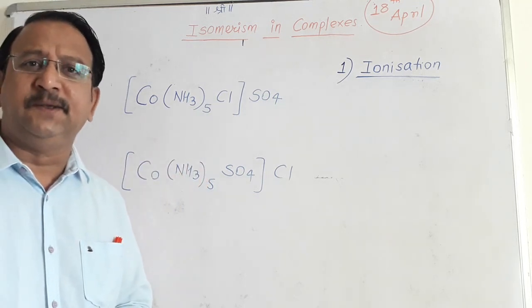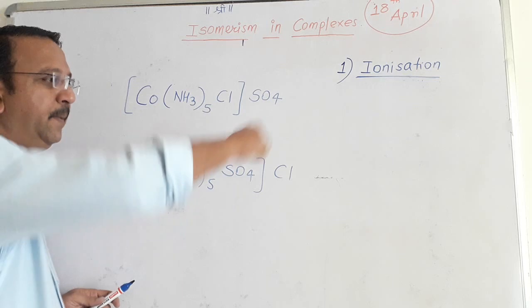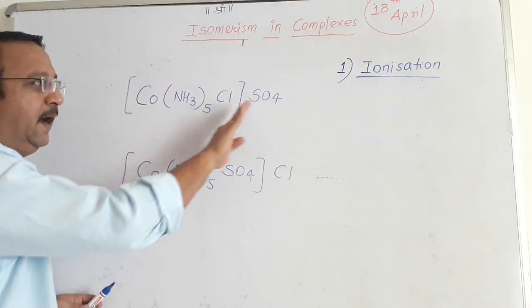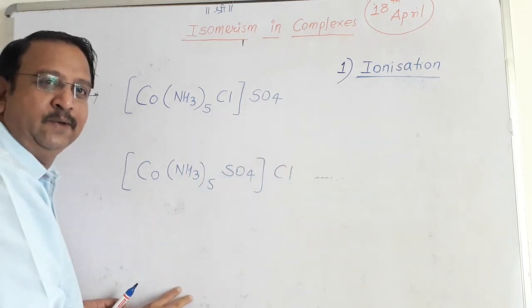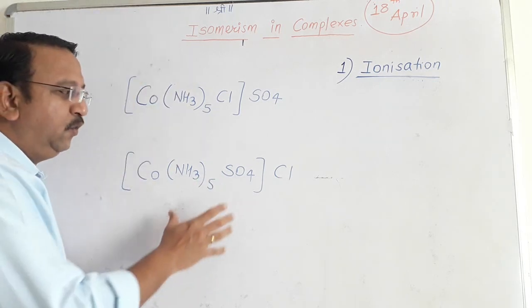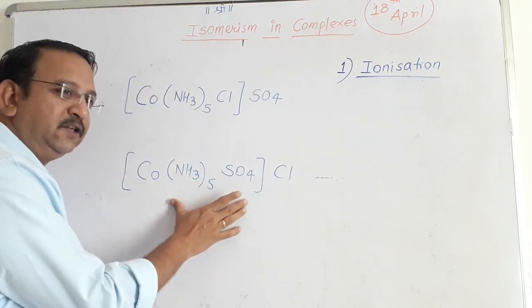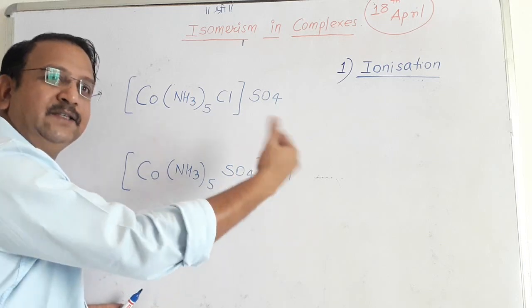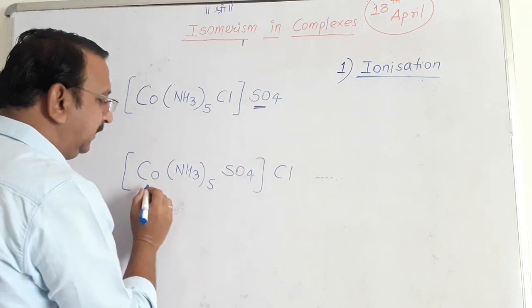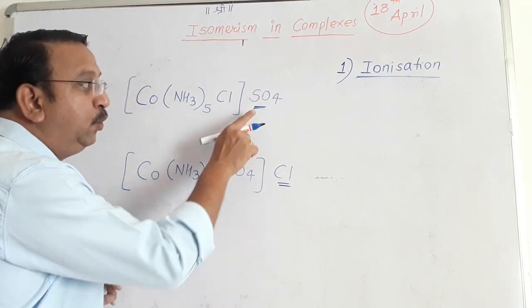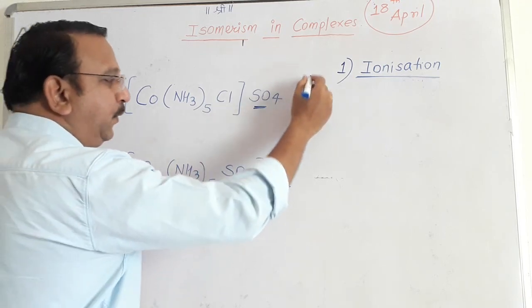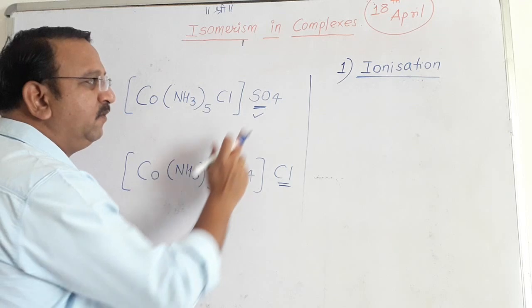Ionization isomerism is very simple. Suppose I take this complex and put it in water, you will find that this entity is floating and sulfate ions are released in the aqueous solution. If you take this particular complex and add it in water, this entity is floating and chloride ions will be in the aqueous solution. This complex gives sulfate ion, this complex gives chloride ion. If I add barium chloride solution in this particular complex, BaCl2 will react with sulfate ions to form precipitate of BaSO4.